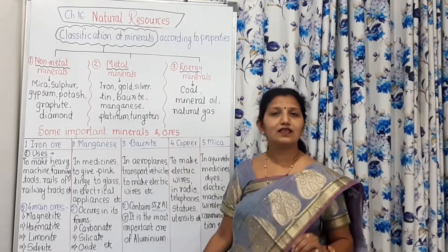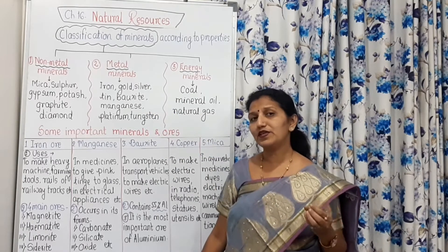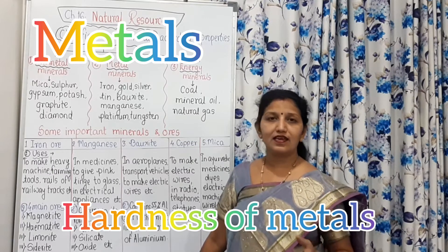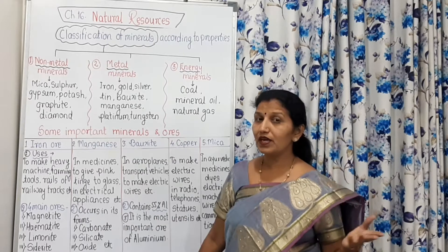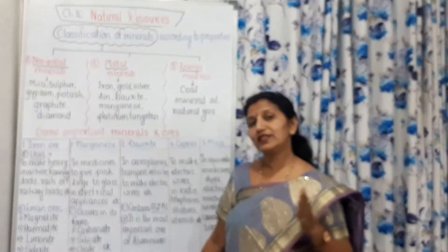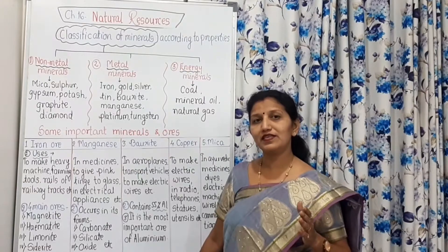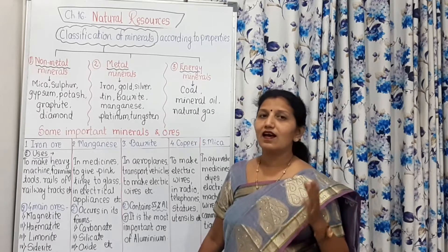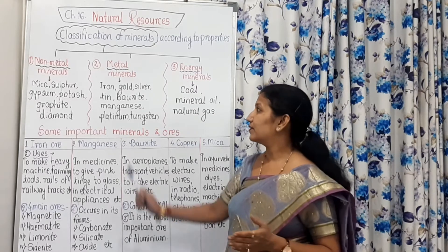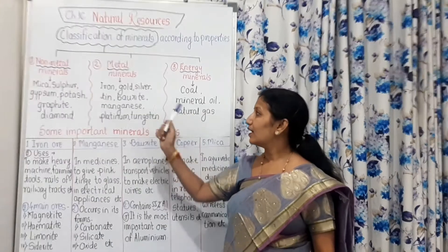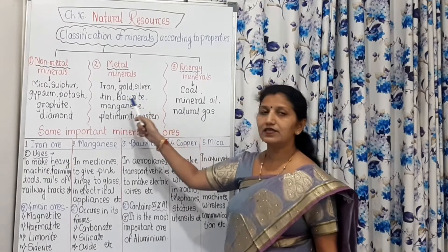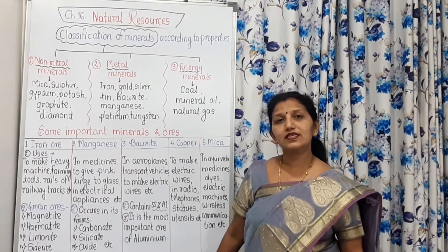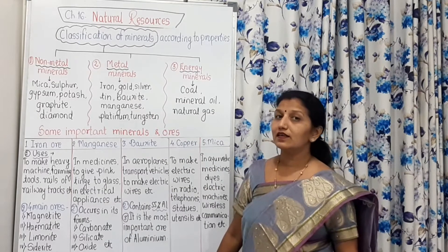Metal minerals have properties such as hardness, density, malleability — meaning they can be made into thin sheets — and ductility, meaning they can be drawn into wires. These properties differentiate them from non-metals. Examples of metal minerals include iron, gold, silver, tin, bauxite, manganese, platinum, and tungsten.